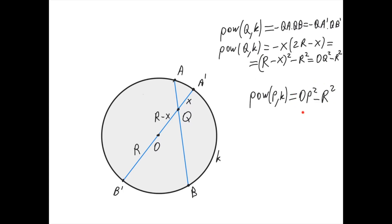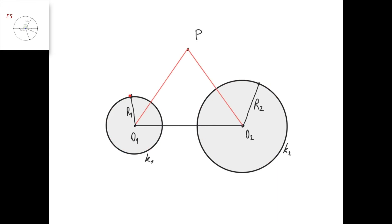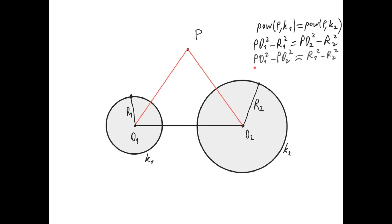Now that we know the full definition of the power of a point, let's ask: if we have two circles, which points in the plane have the same power with respect to both circles? We assume one circle lies completely outside the other. Call the circles K1 with center O1 and radius R1, and K2 with center O2 and radius R2. For a point P where the power with respect to K1 equals the power with respect to K2, we get: PO1 squared minus R1 squared equals PO2 squared minus R2 squared, or PO1 squared minus PO2 squared equals R1 squared minus R2 squared.